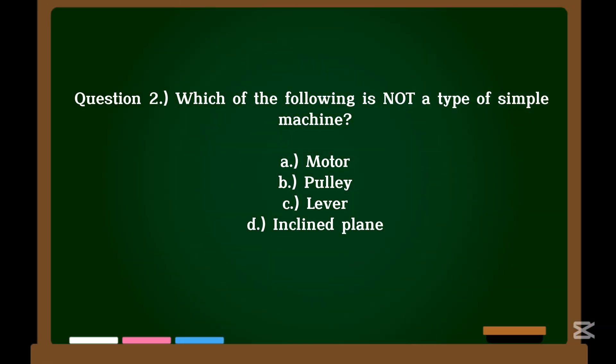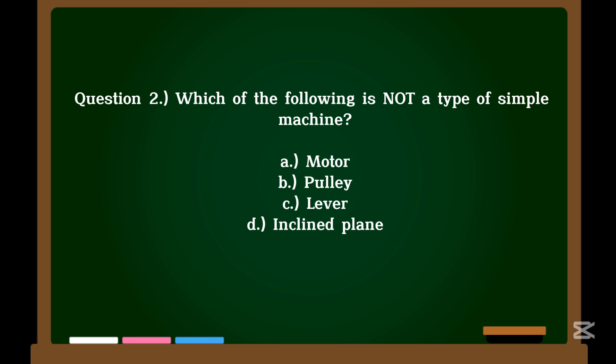Question 2. Which of the following is not a type of simple machine? A. Motor. B. Pulley. C. Lever. D. Inclined plane. Correct answer: A. Motor.